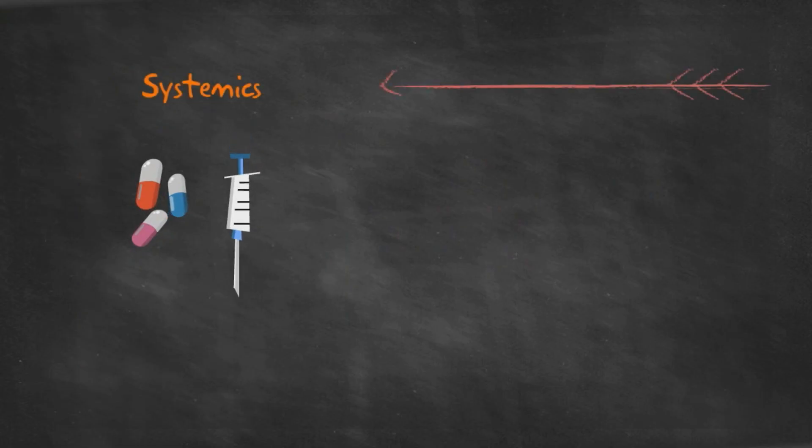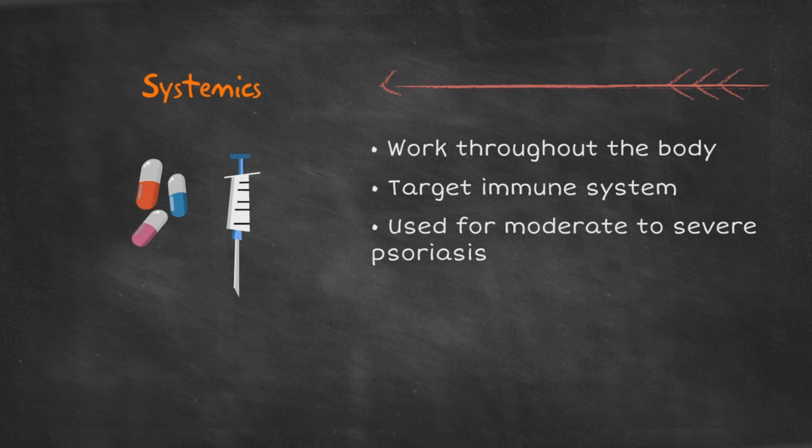Systemics are often taken orally or given by injection and work throughout the body. They often target the immune system to suppress it and are used for treatment of moderate to severe psoriasis.